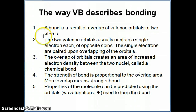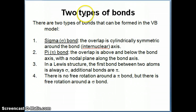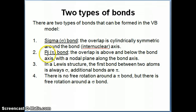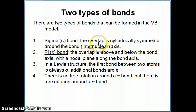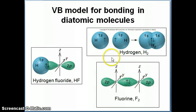What I want to mention now is that based on the way these orbitals overlap with each other, there are actually two different types of bonds you can form in the valence bond model. They are called the sigma bond, which uses the Greek letter sigma, and the pi bond, which uses the Greek letter pi. The difference between the two is how the overlap is arranged with respect to something called the bond axis or internuclear axis.